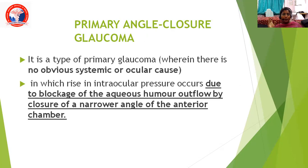Now we go into primary angle closure glaucoma. This is a type of primary glaucoma — again primary means there is no obvious systemic or ocular cause — in which rise in intraocular pressure occurs due to blockage of aqueous humor outflow by closure of a narrower angle of the anterior chamber.